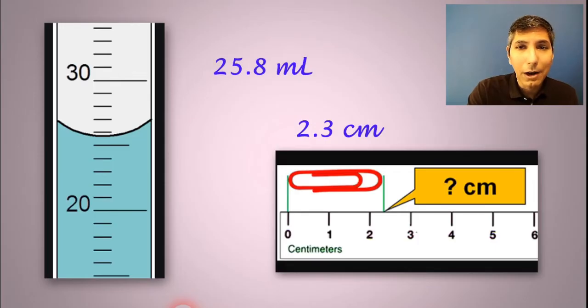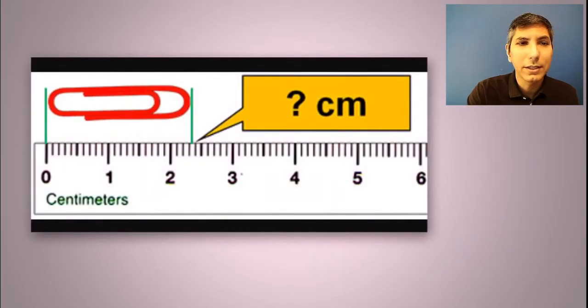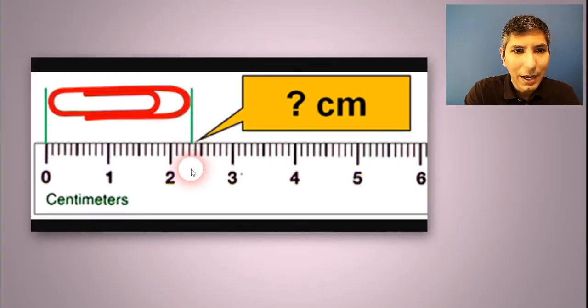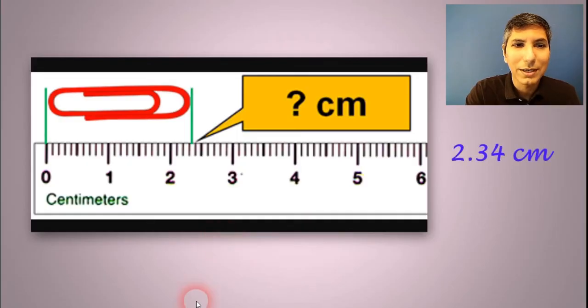Now, remember, our ability to measure is dependent on the measuring tool that we have available to us. So here's the exact same paper clip, but this time we have a ruler that measures to the tenths of a centimeter or a millimeter, as we might say. This time we know it's between 2.3 and 2.4. So now we still have to read between the lines and say maybe it's about 2.34 centimeters.